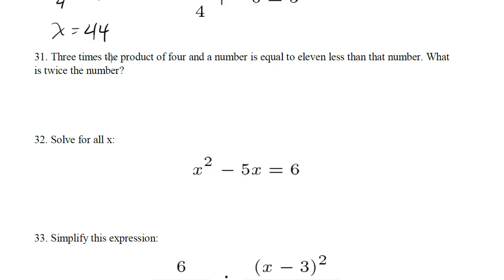Okay, so let's translate these words into an equation. Three times the product of 4 and a number, so 4n, is equal to 11 less than that number. Remember, be careful with the less than, so it's actually going to be n minus 11, not 11 minus n.